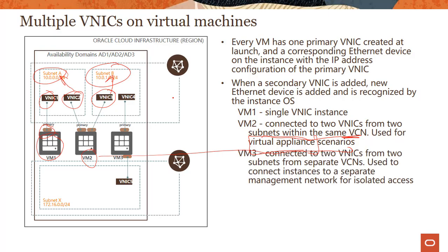VM3 gets even more interesting. Like VM2, it has two VNICs, but these two VNICs are living in two completely separate virtual cloud networks — virtual network one and virtual network two. You would use this configuration for management purposes: if you have many VCNs and need to manage things across them, you'd have a leg in each VCN to provide a management network for isolated access.